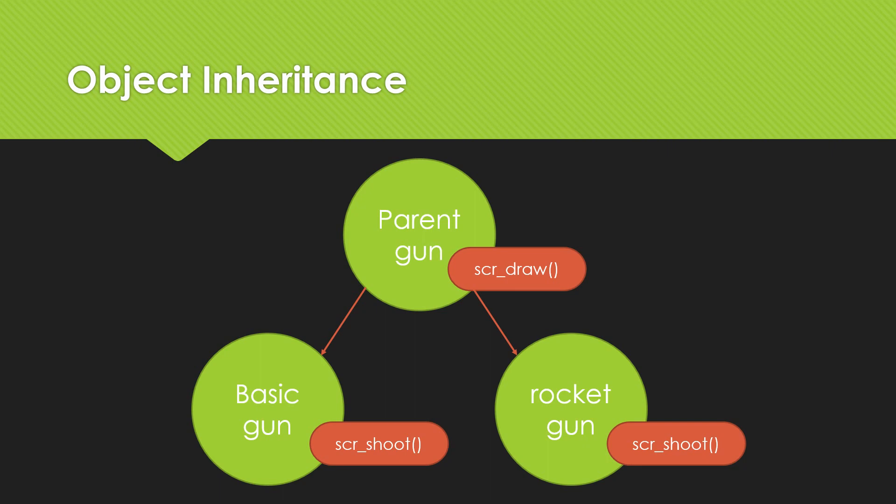By wielding object orientation in these three ways, you should be able to build much more robust code, and any extra time you spend building inheritance trees or building up interfaces does pay off in the long term as your project gets larger.